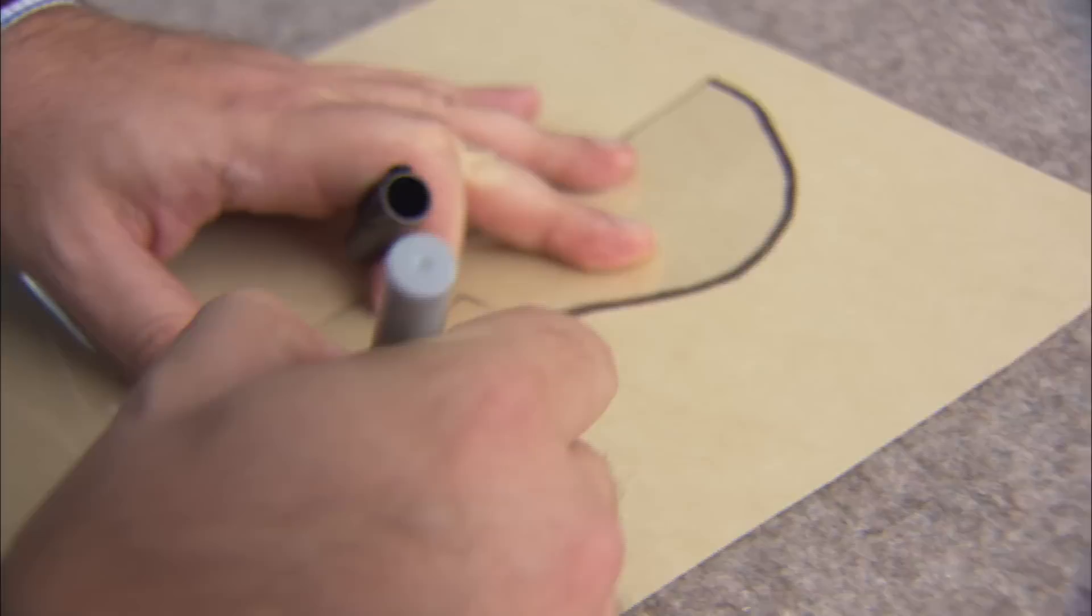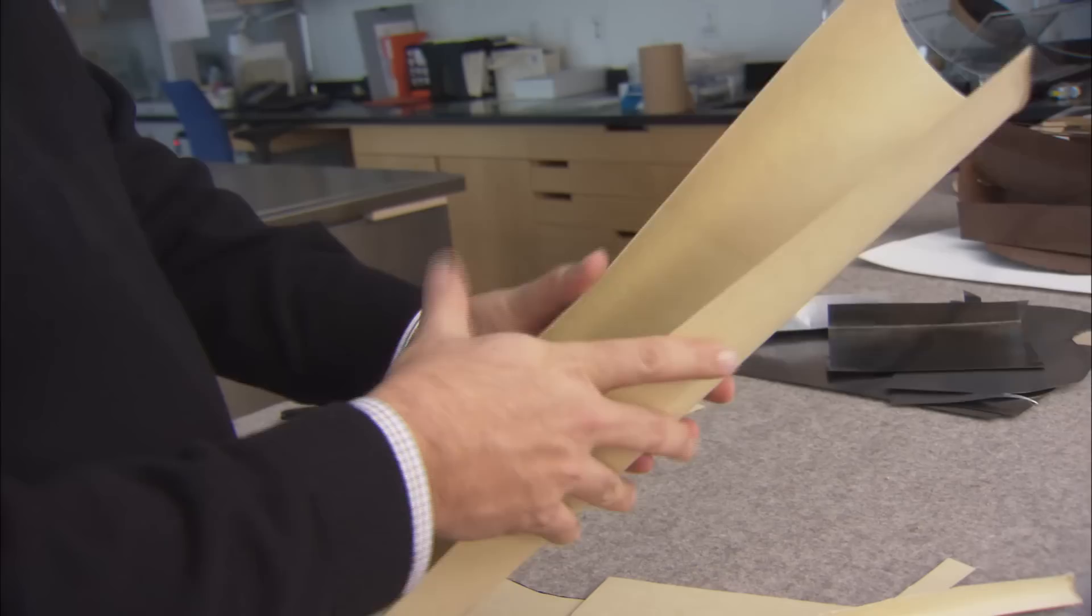Picasso started with flat sheets of cardboard and probably drew out the shapes that form the guitar. Folding, cutting, bending. He created a guitar.